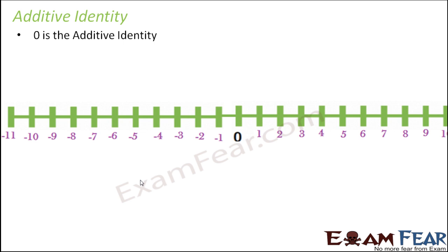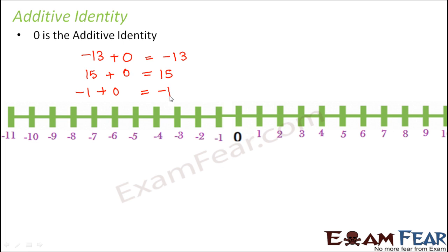0 is called the additive identity, because when you add 0 to any integer you get the same integer. 15 plus 0 equals 15; 0 plus minus 1 equals minus 1. When you add 0 to any number, say minus 1 plus 0, you are not adding anything — 0 is nothing — so you stay at minus 1. No jump is made, so the result is minus 1. Therefore, minus 13 plus 0 equals minus 13.